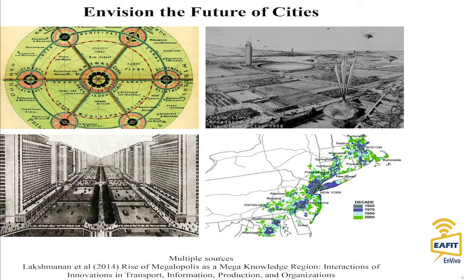A little background knowledge on envisioning the future of cities. The top-left image is the Garden City from 1902 — one of the earliest visions of what future cities should look like, introducing a polycentric urban structure from a monocentric one. Next to it is an image by architect Frank Lloyd Wright from the 1930s proposing the concept of Broadacre City, where everyone owns their own land and people live in harmony.